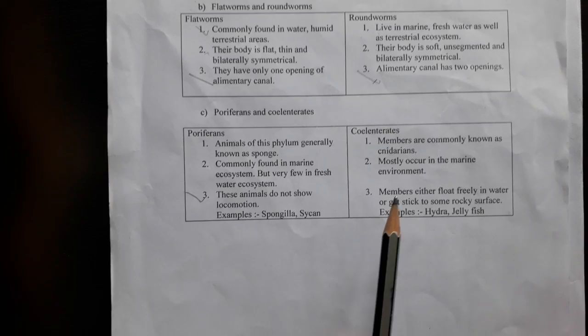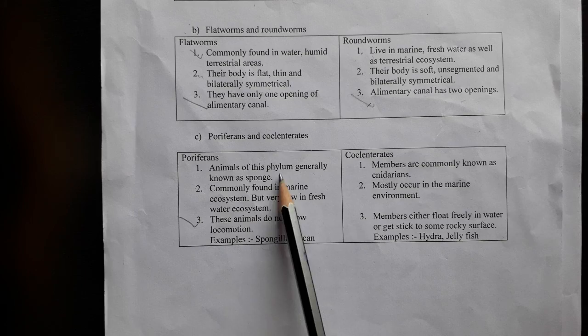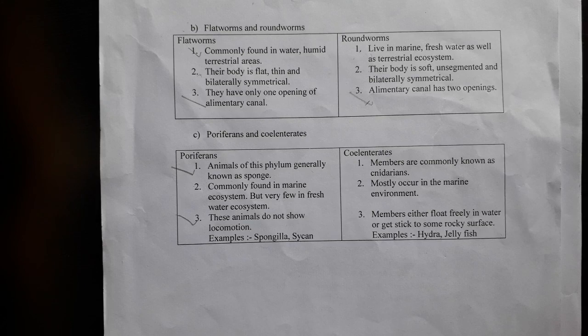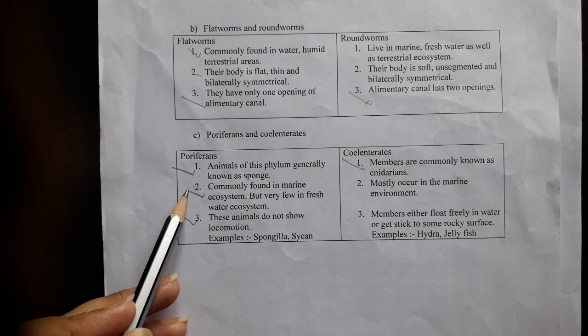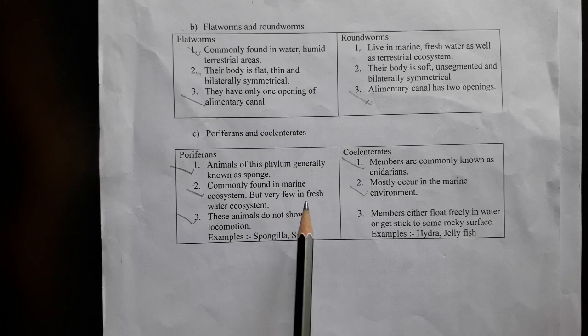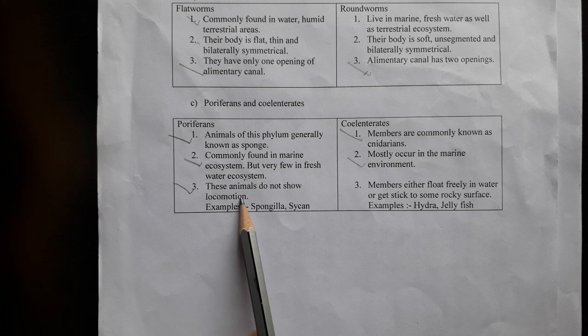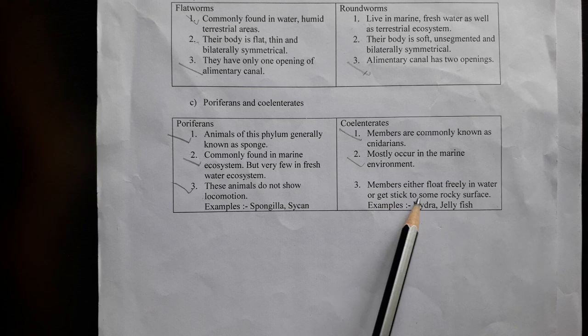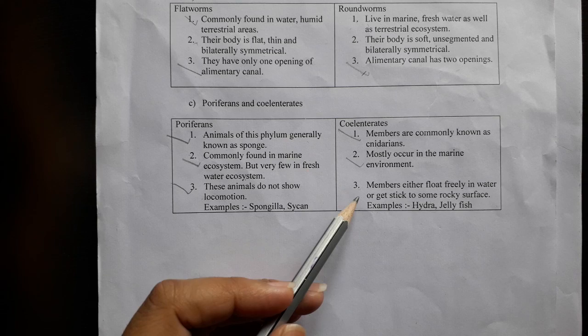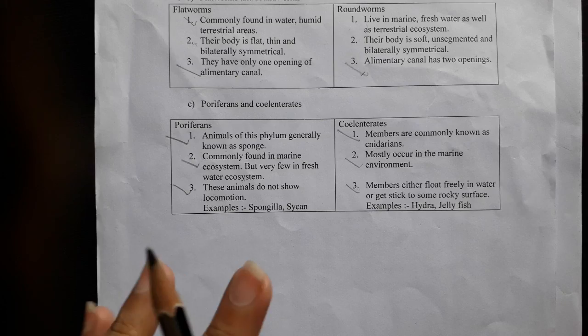Difference between Porifera and Cnidaria: animals of phylum Porifera are generally known as sponges; members of Cnidaria are commonly known as nidarians. Porifera are commonly found in marine ecosystems; Cnidaria are found in marine environments but some are found in freshwater. Porifera do not show locomotion — members either float freely in water or stick to a rocky surface. Examples: Porifera — sponge; Cnidaria — hydra and jellyfish.